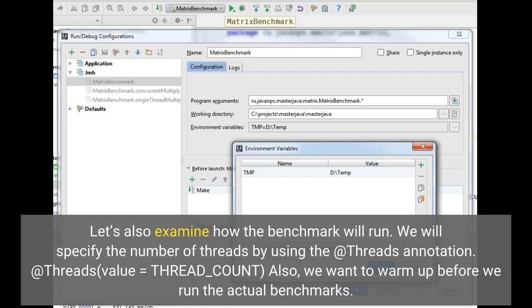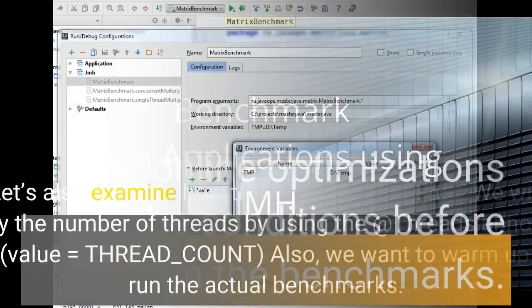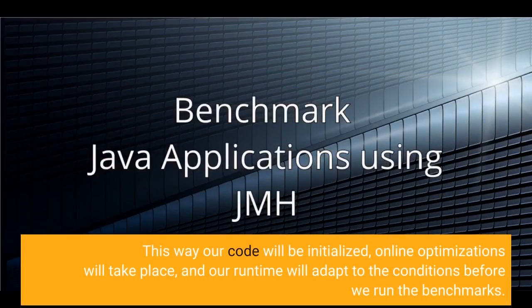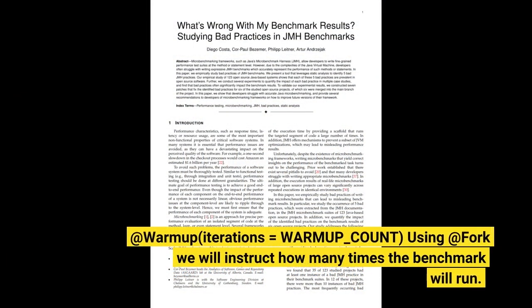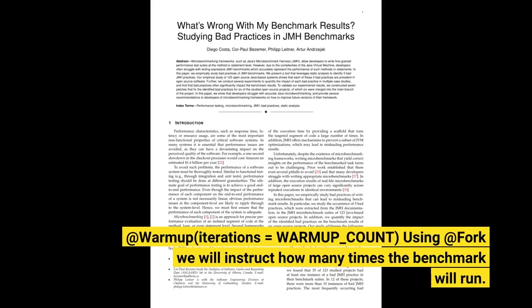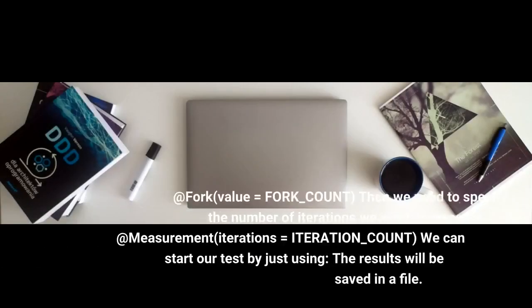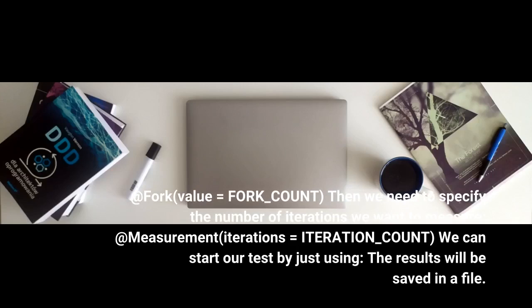Also, we want to warm up before we run the actual benchmarks. This way our code will be initialized, inline optimizations will take place, and our runtime will adapt to the conditions before we run the benchmarks. @Warmup(iterations = WARMUP_COUNT). Using @Fork we will instruct how many times the benchmark will run: @Fork(value = FORK_COUNT). Then we need to specify the number of iterations we want to measure: @Measurement(iterations = ITERATION_COUNT).